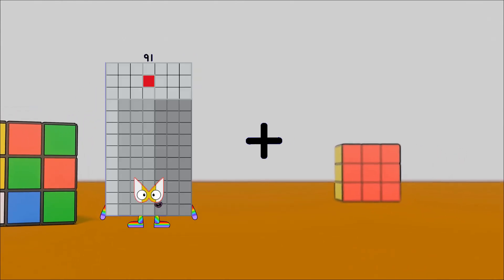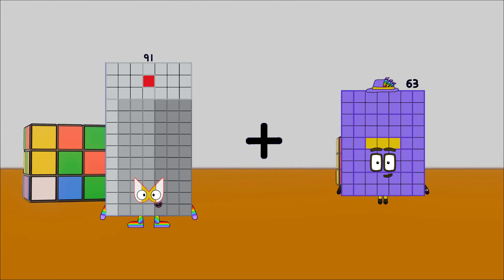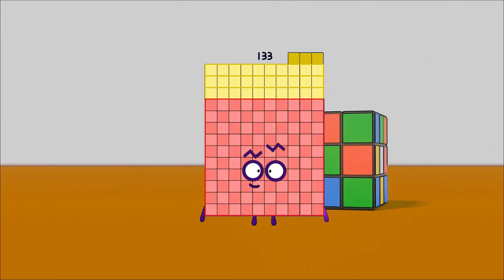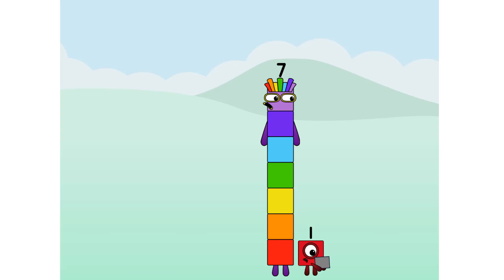91 plus 42 equals 133. Oh, you're just playing Minecraft. I like to cut G.